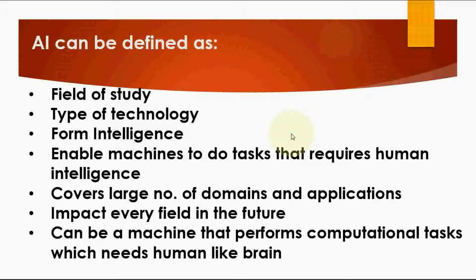This is an overview from previous videos. AI can be defined as: a field of study, one type of technology, and a form of intelligence. It enables machines to do tasks that require human intelligence. It covers a large number of domains and applications and has an impact on every field. It is a continuously growing field according to the revolution of time.